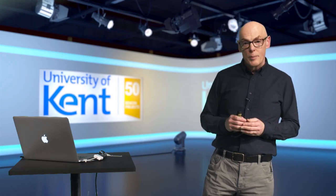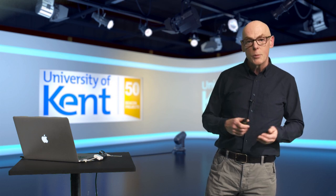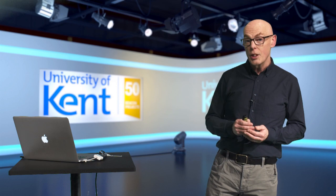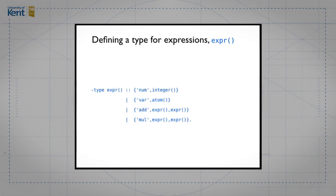What about in general? How can we describe what all the expressions look like? Well, what we can do is give a type declaration. We can say what the type of expressions looks like. And what this says is that there are four different alternatives for what an expression looks like. They're each a tuple. The first one says it's a pair that begins with the atom num. It says it's a number and is followed by an integer.